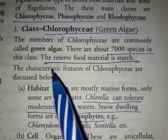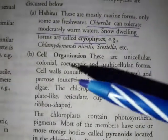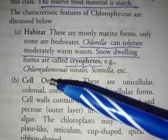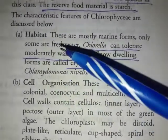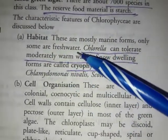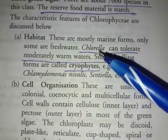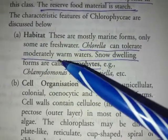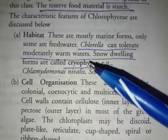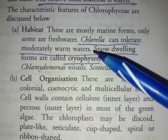The next point is habitat — how they survive in their environment. These are mostly marine forms; only some are freshwater aquatic. Freshwater forms are fewer. Chlorella can tolerate moderately warm water.